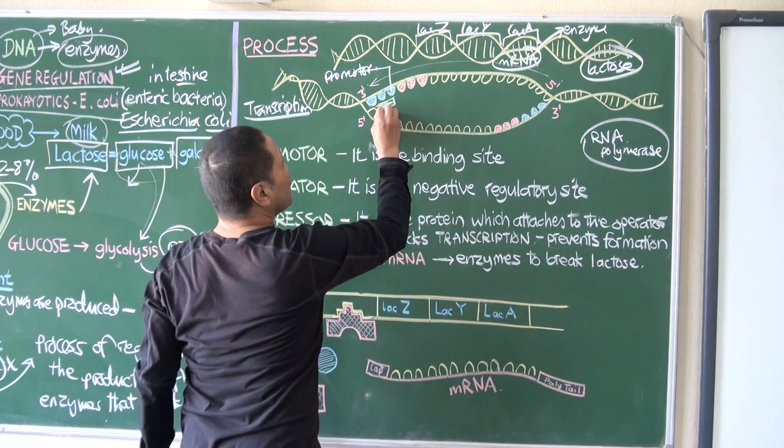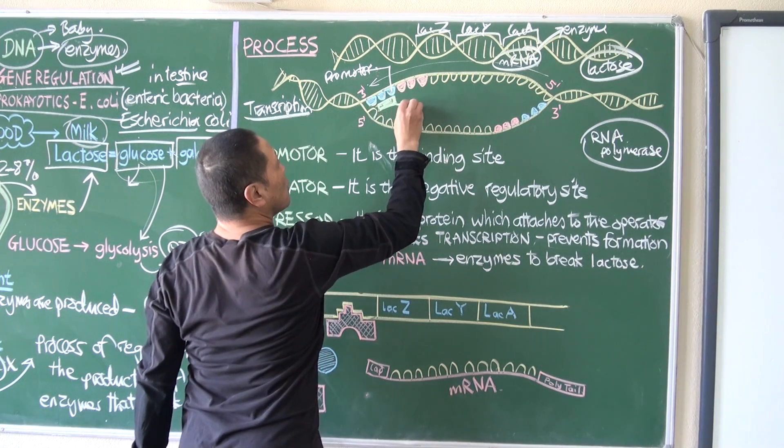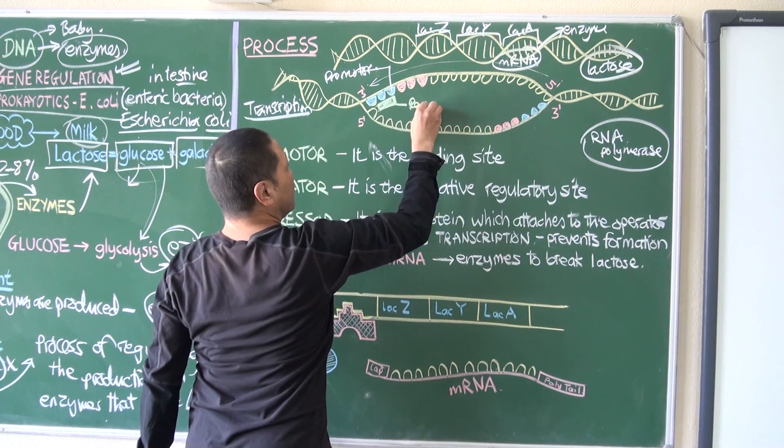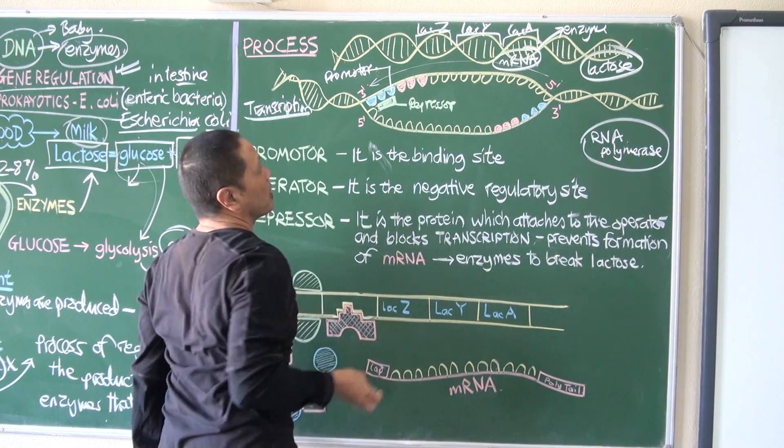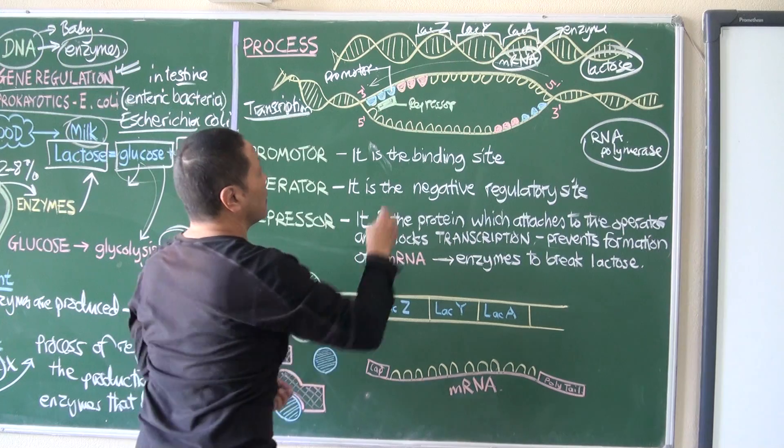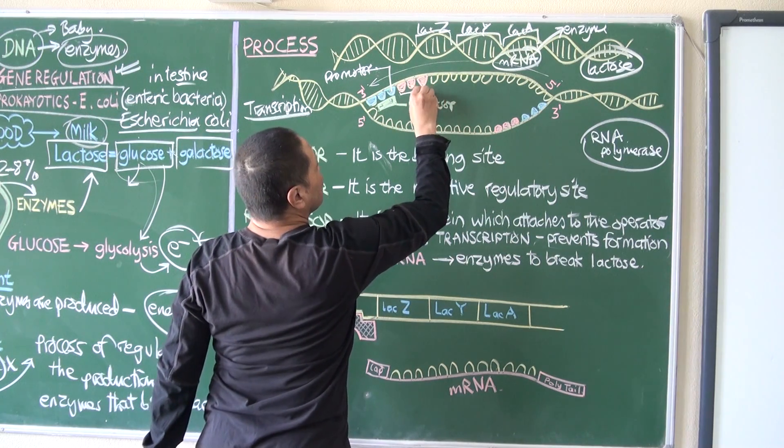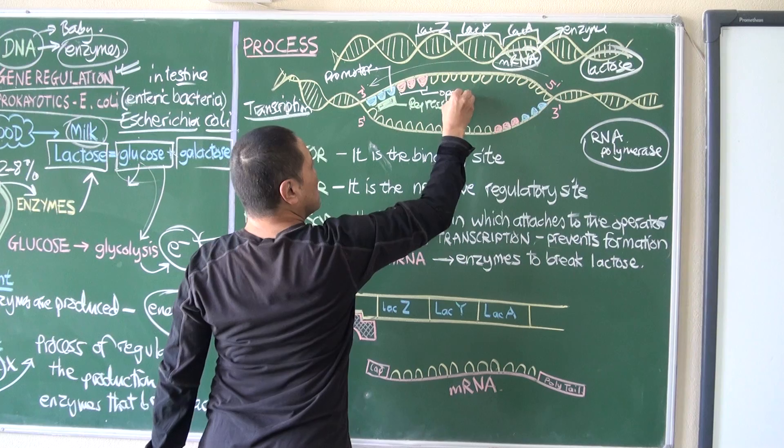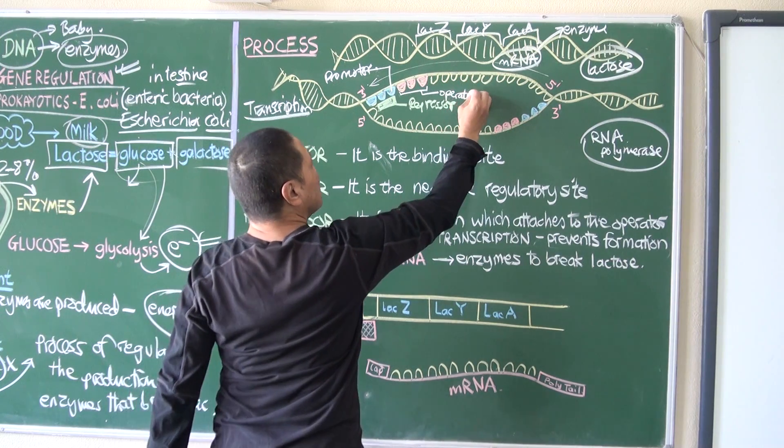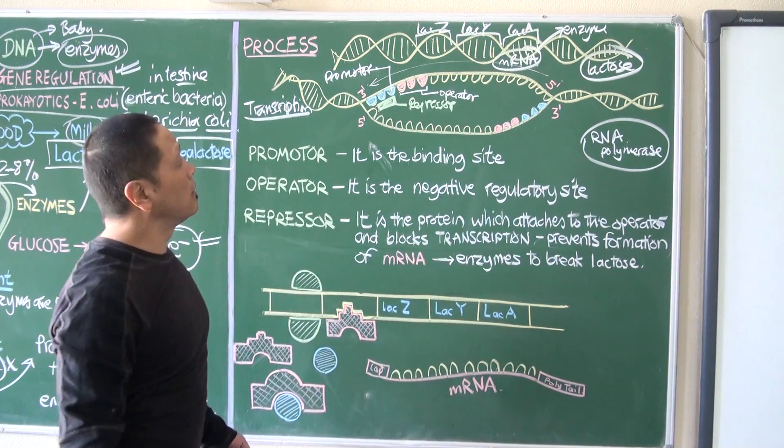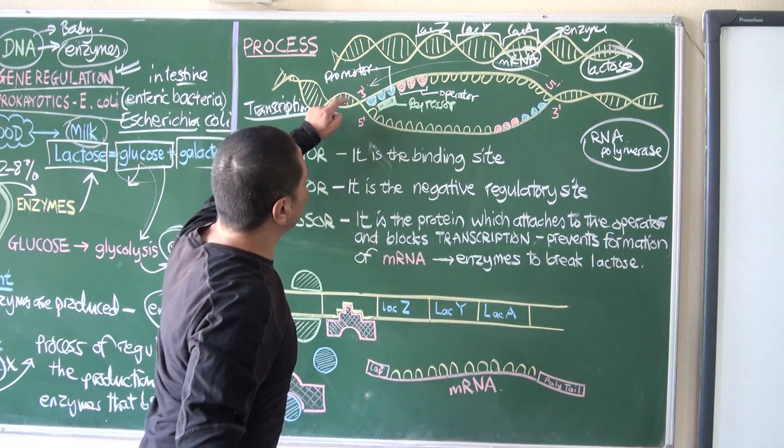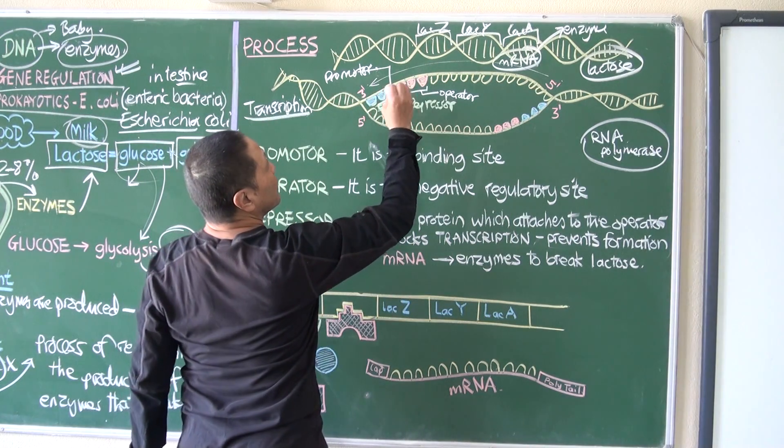And the big one here is called your operator. And here we find repressor is on the operator, and on the promoter we find RNA polymerase.